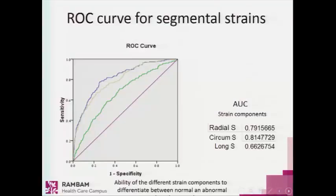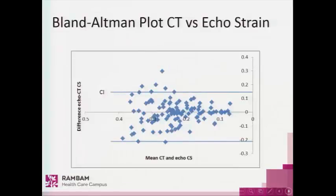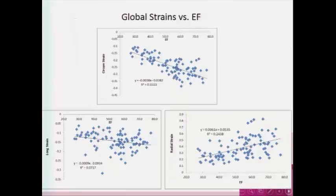This is an ROC curve, which gives us the ability of the different strain components — the radial, circumferential, and longitudinal strain — to differentiate between normal and abnormal based on the visual grading. This is a Bland-Altman plot of CT versus echo strain, which shows good agreement with very little bias. Comparing the global strain with the ejection fraction, there is very good correlation, especially in the circumferential component of the strain and also the radial, and to a lesser degree in the longitudinal component.